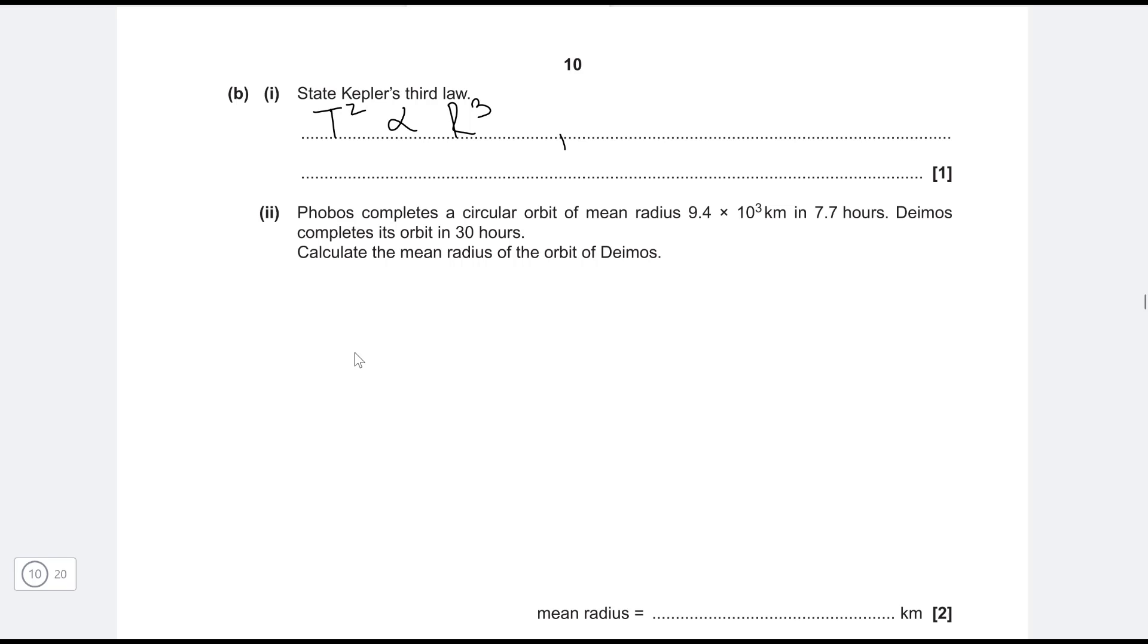What I'm going to say is that t is the orbital period, and r is the orbital distance.